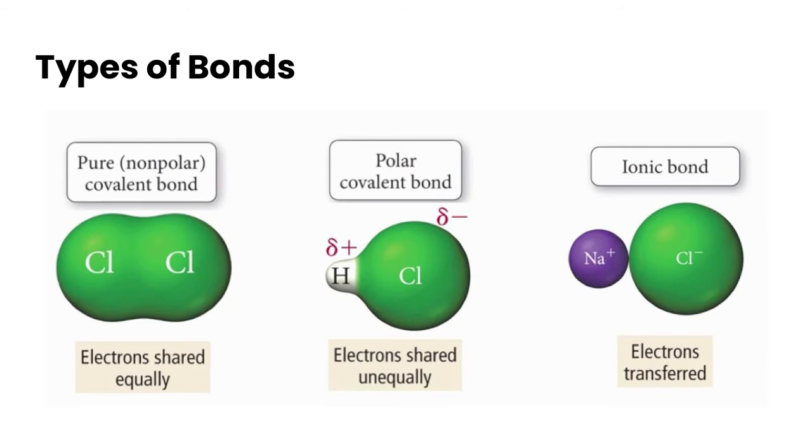So knowing the electronegativity values and knowing the difference between the electronegativity values can actually help us to determine the type of bond we have in a compound. There are three main types, the first of which is a pure covalent bond. And this is where the electrons are shared equally. The second is a polar covalent bond, and we say polar because we have that bond polarity now. You can see this HCl molecule would have a bond dipole pointing towards the chlorine because they are shared unequally.